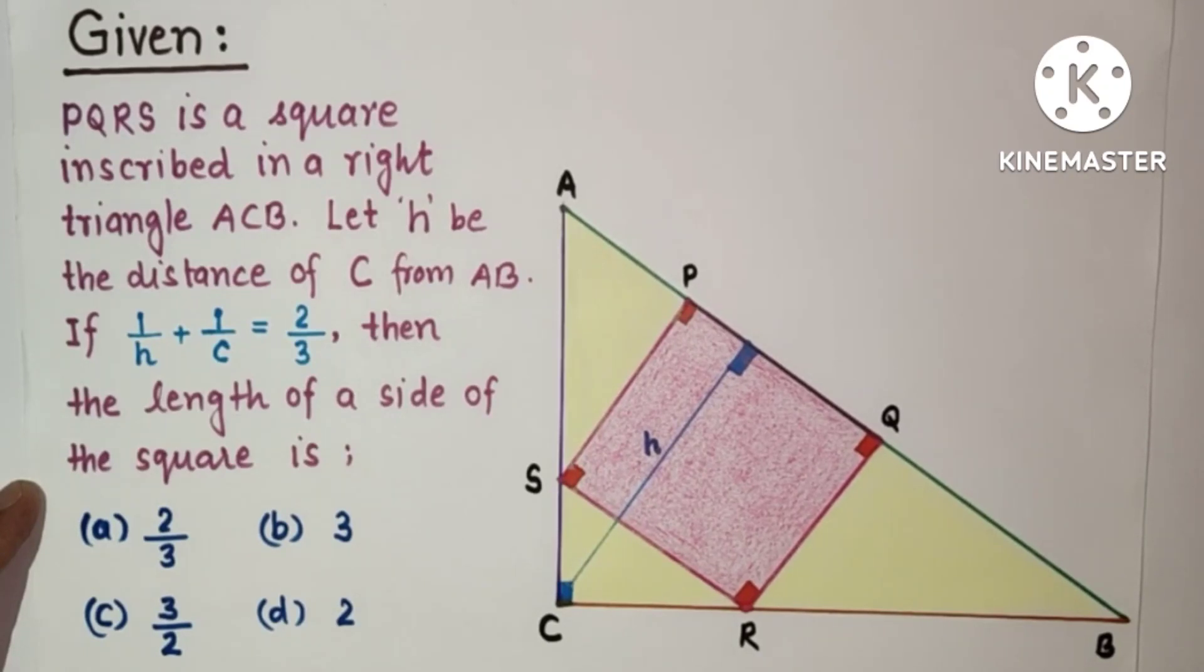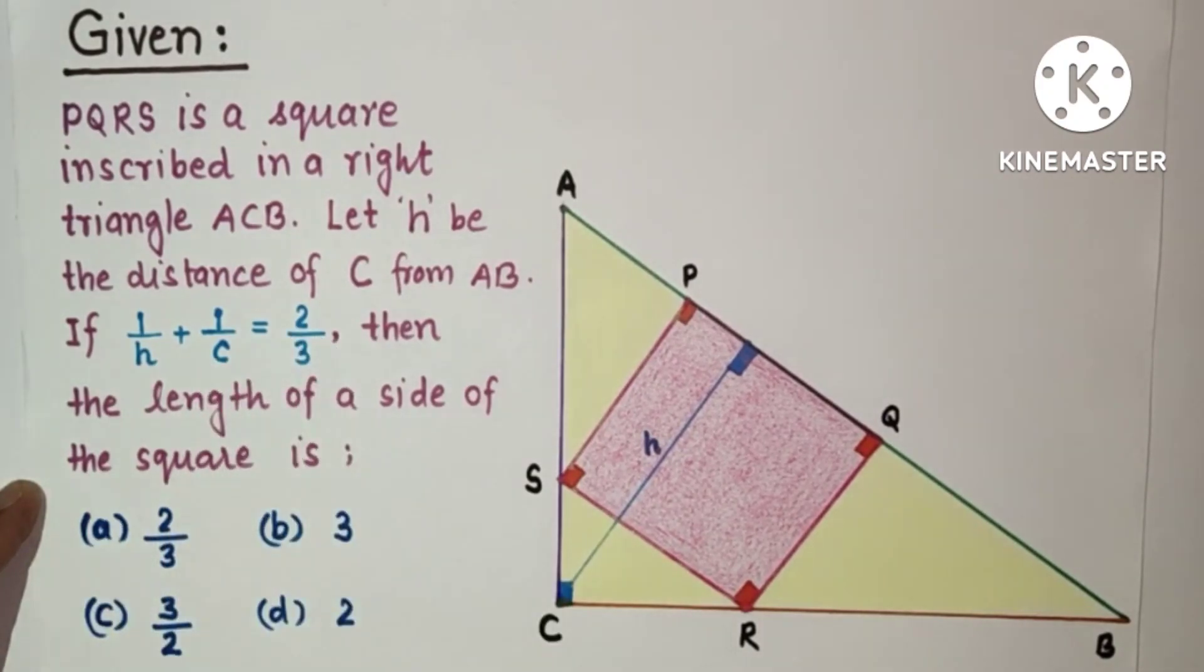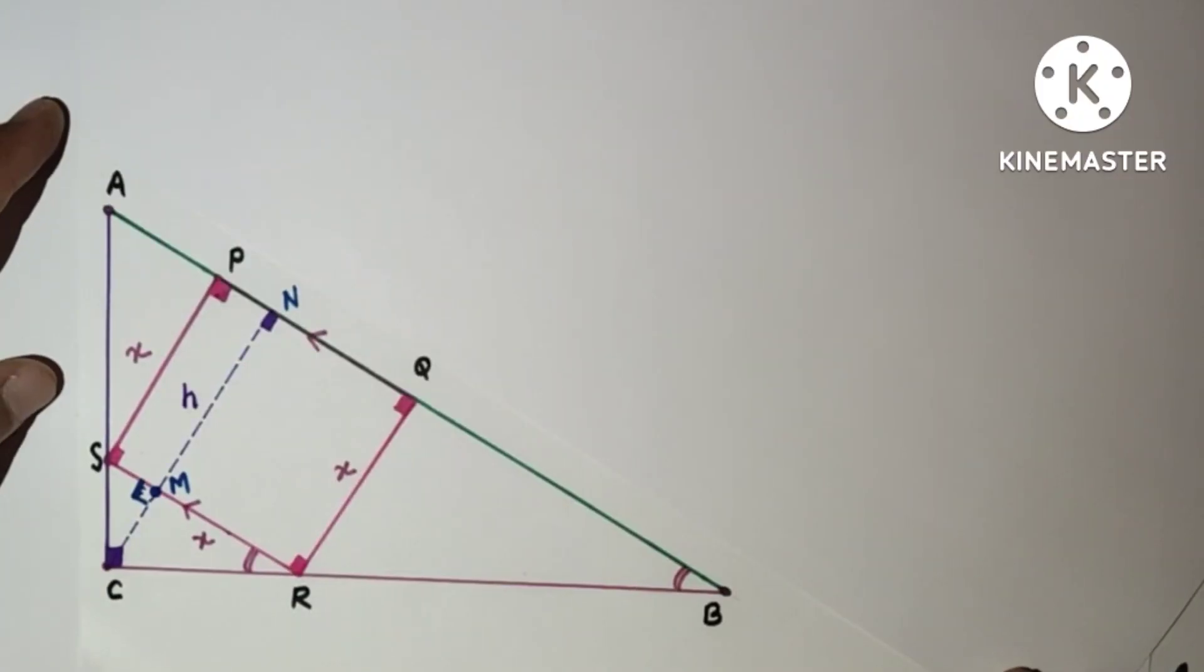We have to find the length of a side of the square. The four options are: (a) 2/3, (b) 3, (c) 3/2, and (d) 2. We have to select the correct option.